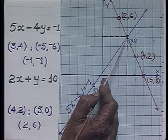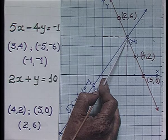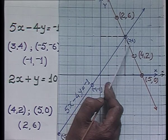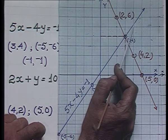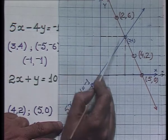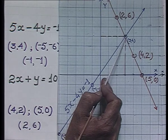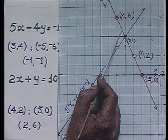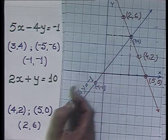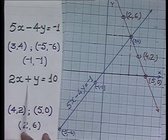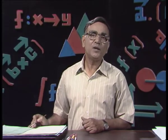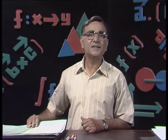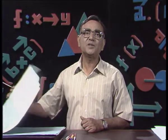The two lines intersect at this point, and there is no other point of intersection. So ordered pair (3, 4) satisfies the first equation — whose line is here — and the second equation. This point is present on both lines, hence it is a solution for both equations and therefore the solution for the system.